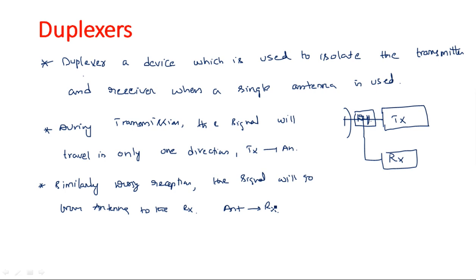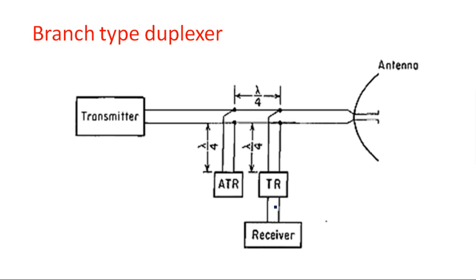Examples of duplexers include the balanced type, directional coupler, circulator, isolator, gyrator, and magic T, which is preferred for applications like adding, subtracting, or isolating signals. Most commonly, circulators, isolators, and directional couplers are mainly preferred as duplexing elements.